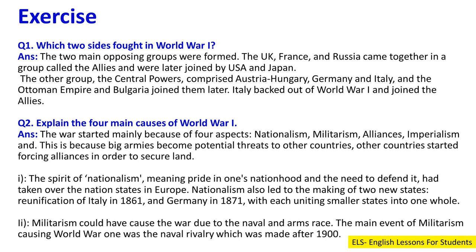Question 2: Explain the four main causes of World War One. Answer: The war started mainly because of four aspects — nationalism, militarism, alliances and imperialism.